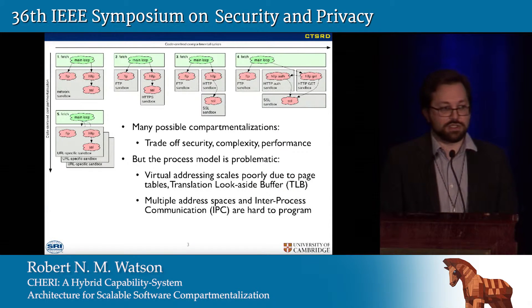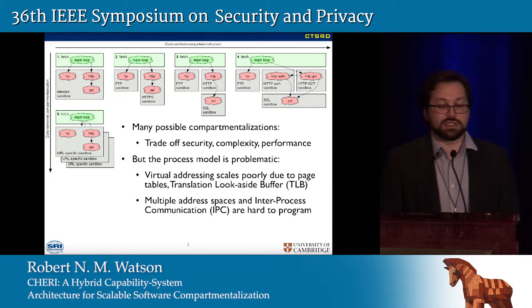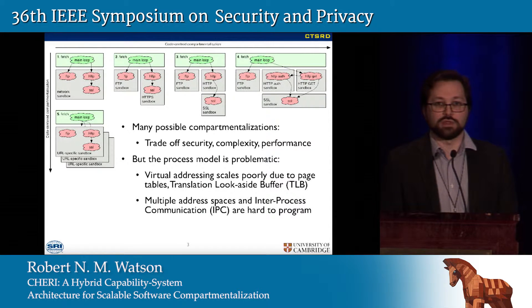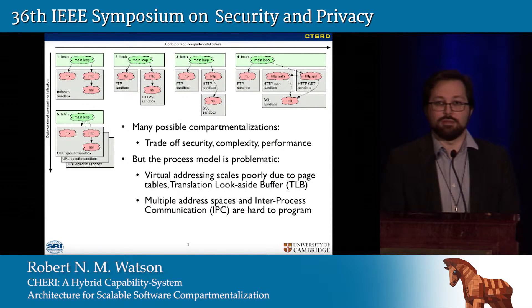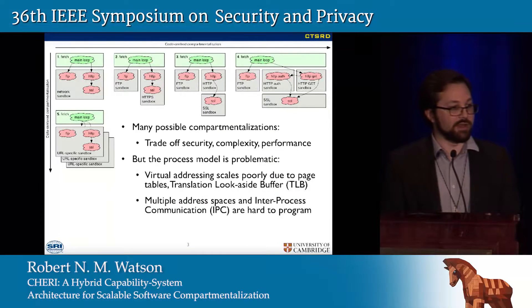There are really two costs we're interested in. The first is a performance cost that comes from the hardware-software interface and the process model. When you create processes, you pay the cost in memory for page tables and for memory access to them on every virtual address access. We have a translation lookaside buffer that caches the most frequently used mappings. The TLB is not only a very expensive associative hardware structure, but also quite bounded in size. When we start to compartmentalize software, we need more shared memory, and we get multiple entries in that cache for each underlying physical page — a nasty scalability problem.